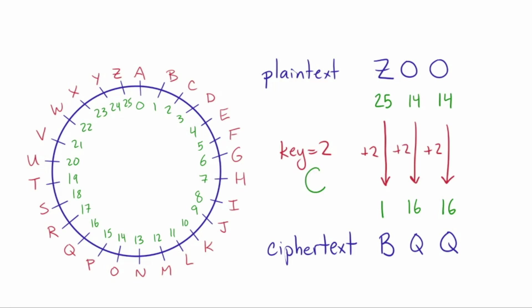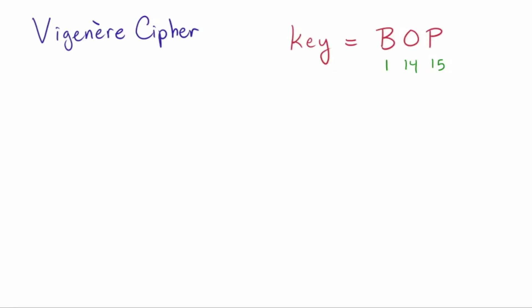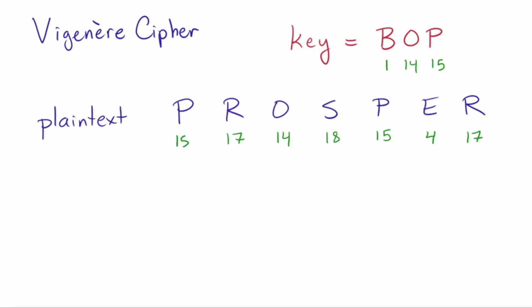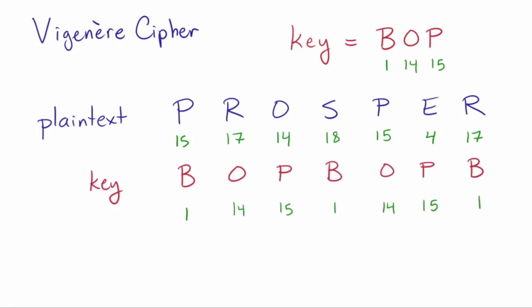For Vigenère Cipher, our key is not just one letter but a string of letters — it could be a word. So suppose we use the key BOP, also known as 1, 14, 15. Then the idea is to shift the first letter of the plain text by B, the second letter by O, and the third letter by P. When we've used up the key letters, we start again. So suppose I want to encrypt the message PROSPER using the key BOP. Here's my plain text and the associated numbers. Here's how the key lines up with the plain text — I just repeat BOP, BOP, BOP over and over again. To compute the cipher text, I'm going to shift the plain text by the key values, which is the same as to say, add them.